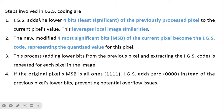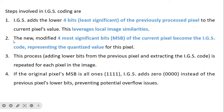There are four steps involved in IGS coding. First, IGS adds the lower four bits of the previously processed pixel to the current pixel value, leveraging local image similarities. Second, the new modified 4 MSBs of the current pixel become the IGS code, representing the quantized value for this pixel. The process continues — adding lower bits from the previous pixel and extracting the IGS code. If the original pixel's MSBs are all ones, IGS adds 0 to prevent potential overflow.